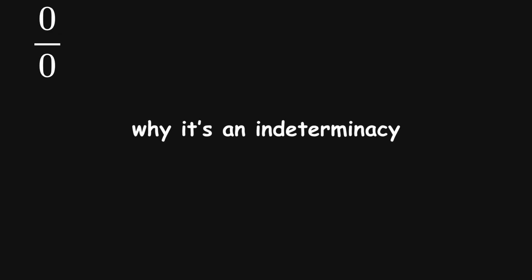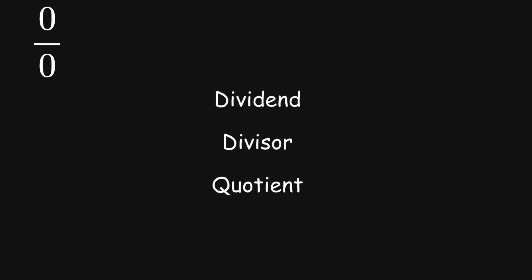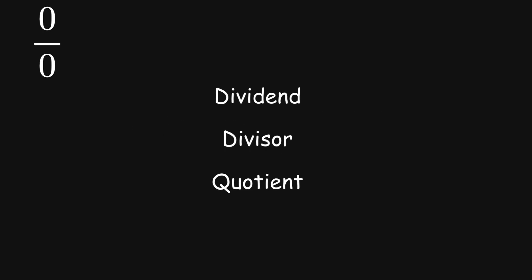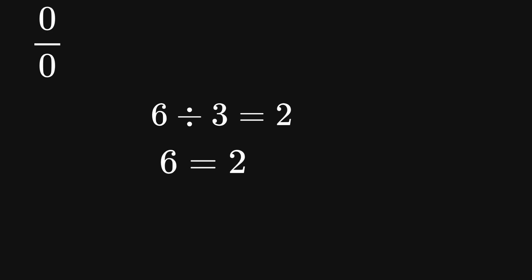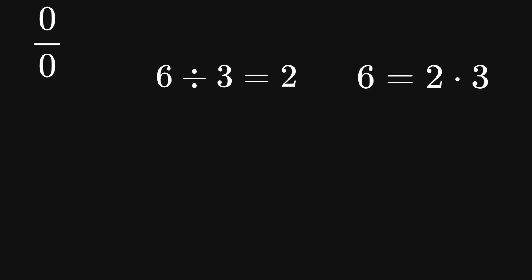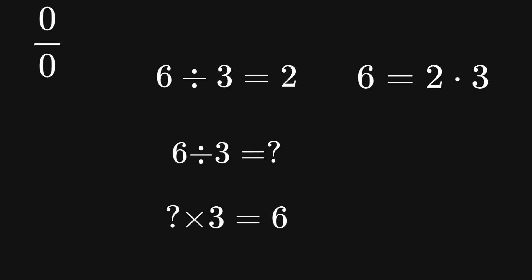0 divided by 0. Let's see why it's an indeterminacy. To understand this, we need to go back to what division actually means. Take a simple example: 6 divided by 3 equals 2. But why? Because 6 equals 2 times 3. Division is just asking: what number, when multiplied by the divisor, gives us the dividend?